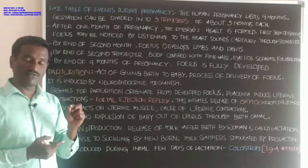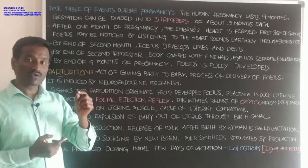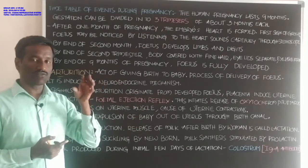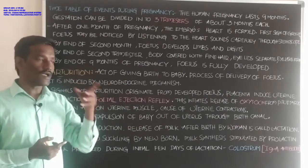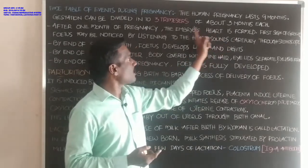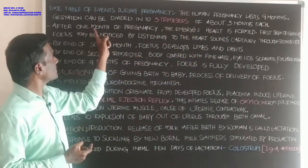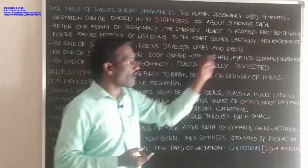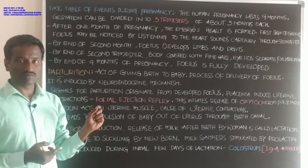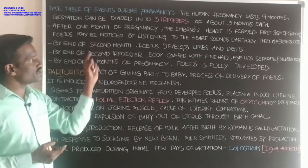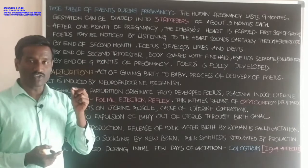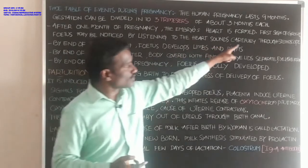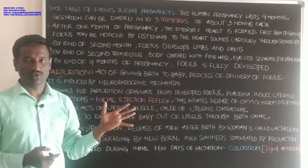During the end of the 1st trimester, organogenesis is completed — different organs and different parts are developed. After 1 month of pregnancy, the embryo heart is formed, and the first sign of the growing fetus may be noticed by listening to the heart sounds carefully through a stethoscope.